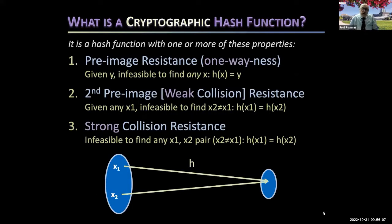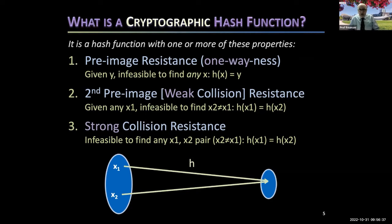Hash functions as used in data structures are fine, but to be a cryptographic hash function we need more than simply hashing the message into a small bit sequence. There are three properties we look for. You need to meet one of them to be a respectable cryptographic hash function, and which one you need depends on the application.